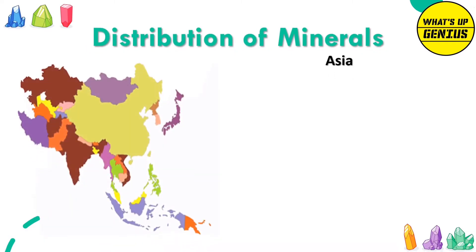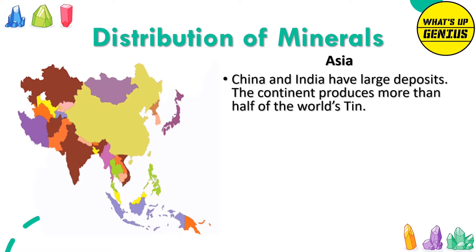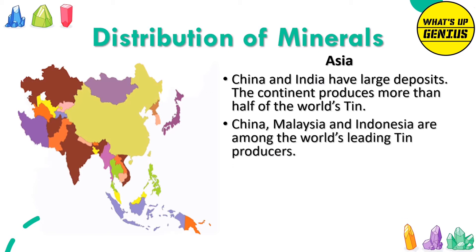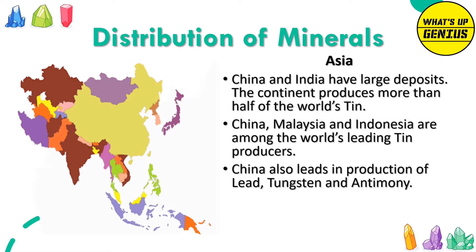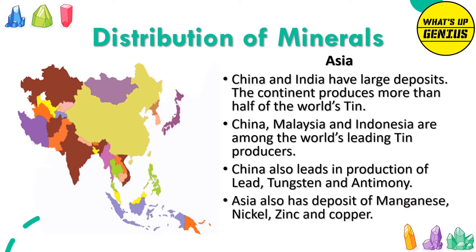Asia: China and India have large deposits. The continent produces more than half of the world's tin. China, Malaysia and Indonesia are among the world's leading tin producers. China also leads in the production of lead, tungsten and antimony. Asia also has deposits of manganese, nickel, zinc and copper.